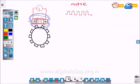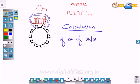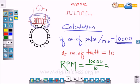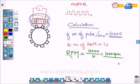We can calculate the speed of the rotor. If the number of pulses generated per minute are 10,000, and the rotor has 10 teeth, then RPM will be 1,000 RPM. This is a simple formula: RPM is the number of pulses per minute divided by the number of teeth.